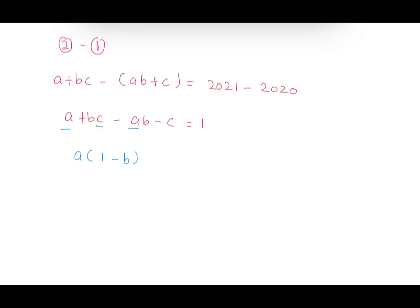We have c and c here, which means we can take out a common factor of c. bc divided by c equals b and negative c divided by c equals negative 1.